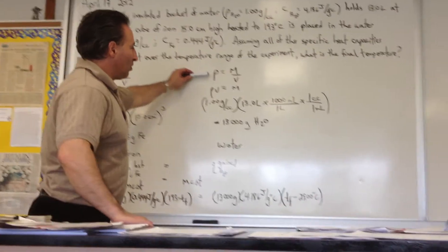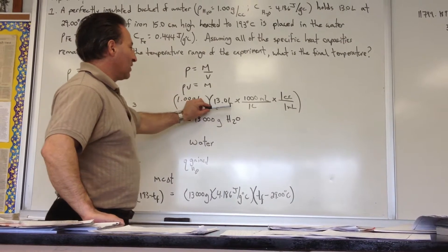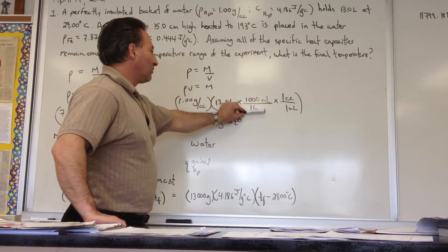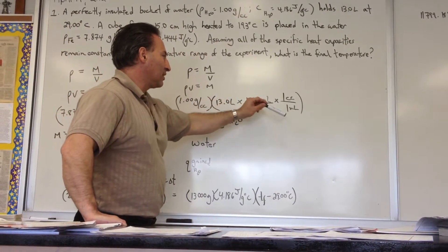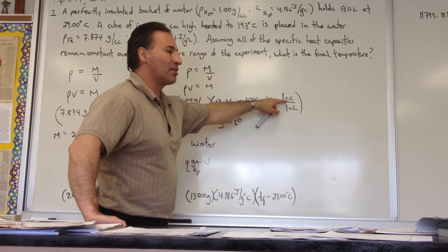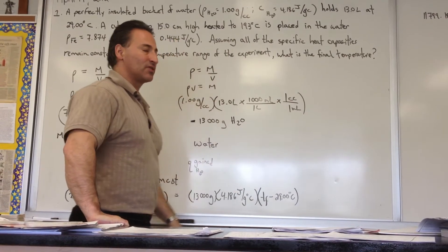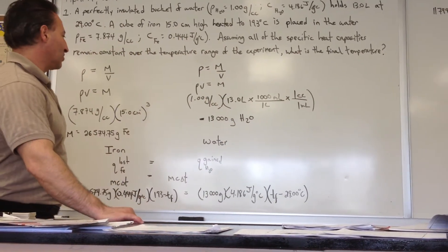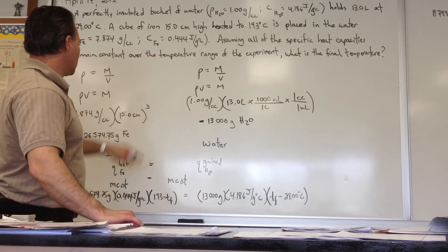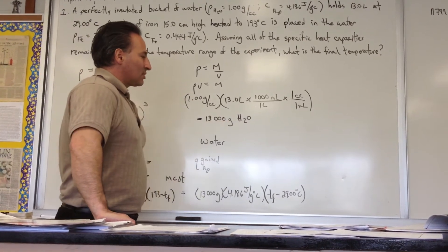I did the same thing with water. Using the fact that water has a density of 1, and there's 13 liters of water, I converted from liters to milliliters and cc's to milliliters. They're interchangeable. Cc's is just another way of saying centimeters cubed. The units are interchangeable. So we have 13,000 grams of water.